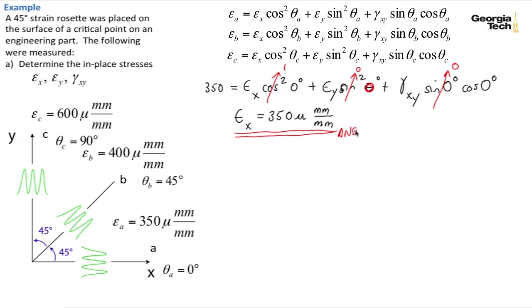Let's do the same thing now for epsilon_c. And so epsilon_c is measured as 600 micro. That's equal to epsilon_x times cosine squared 90 degrees now for epsilon_c, plus epsilon_y times sine squared 90 degrees, plus gamma_xy sine of 90 degrees cosine of 90 degrees.